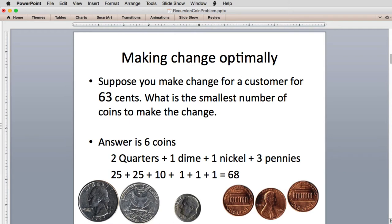The problem we're going to do is how to make change optimally. Suppose you're making change for a customer for 63 cents. So you have to choose a set of coins from available coins - quarters, nickels, dimes, and pennies - that gives you the smallest number of coins to make the change. That would be the optimal solution. So the answer to 63 cents is six coins. It would be two quarters, a dime, and three pennies.